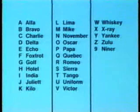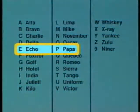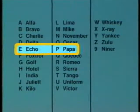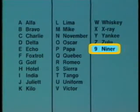A phonetic alphabet is used to reduce the confusion between letters that sound alike. For example, the letters E and P sound very similar, so the words echo and papa are used to represent these letters. Nine is the only number pronounced differently; it is said as Niner.